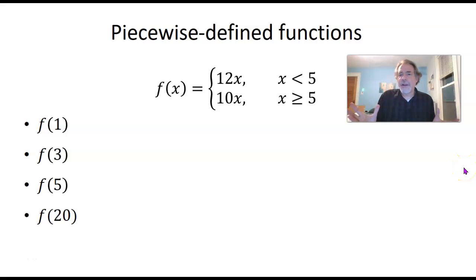Piecewise defined functions are just functions that are defined in more than one piece. Instead of just having a rule or formula that applies to any number you might plug in for X, you have more than one possibility, and which thing you do depends on what kind of number you put in for X, what category it falls into. This might take you a minute to get the hang of, but once you get it, it's pretty straightforward and easy.